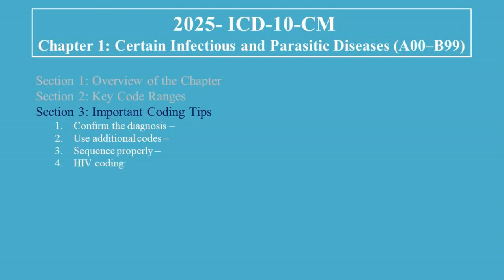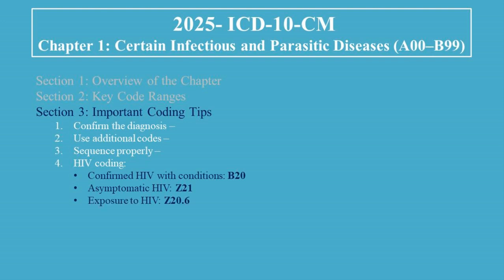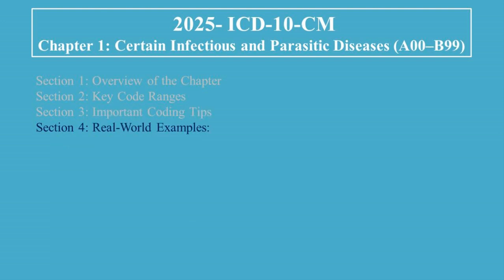Fourth, HIV coding: use B20 for confirmed HIV with conditions, Z21 for asymptomatic HIV, Z20.6 for exposure to HIV, and Z71.7 for HIV counseling.